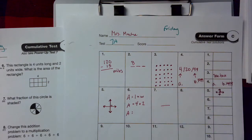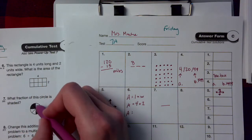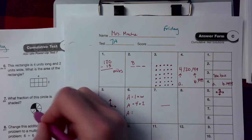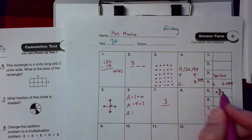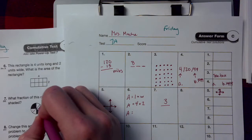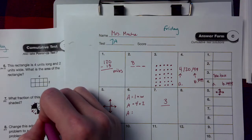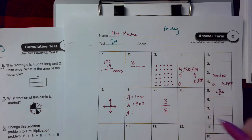Number 7 says what fraction of this circle is shaded? Well, notice this is actually two pieces right here. 1, 2, 3. So that's three pieces that are shaded. How many total are there? 1, 2, 3, 4, 5, 6, 7, 8. There's 8 pieces there. So 8 would be your bottom number.